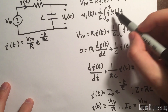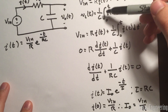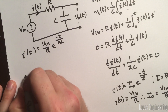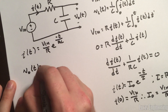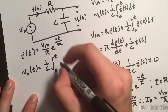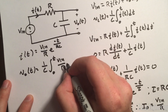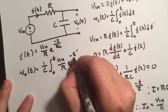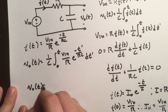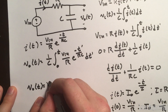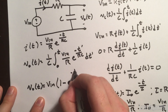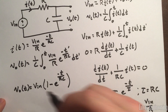Now we have the current as a function of time, so we plug it into the integral for the output voltage. V_out(T) = (1/C)·∫₀ᵀ (V_n/R)·e^(-T'/RC) dT'. Evaluating this integral gives: V_out(T) = V_n·(1 − e^(-T/RC)).